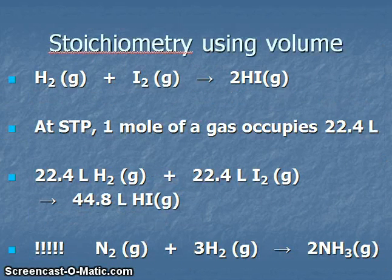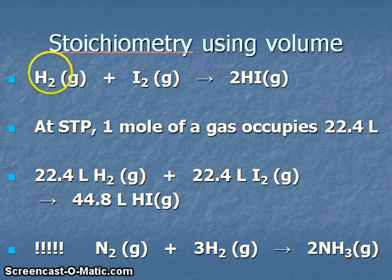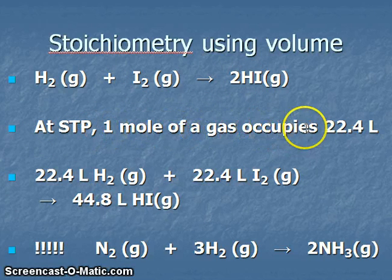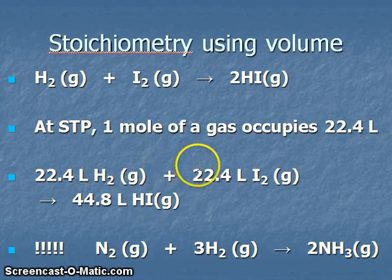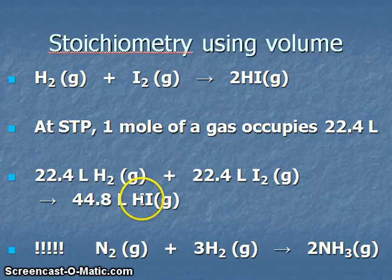It's also possible to do stoichiometry calculations using volume if we're dealing with reactants or products that exist as gases. The example reaction here is diatomic hydrogen reacting with diatomic iodine to form hydrogen iodide. At standard temperature and pressure, one mole of a gas occupies 22.4 liters. So if I have one mole of hydrogen reacting with one mole of iodine, that produces two moles of hydrogen iodide, which would have a volume of 44.8 liters.